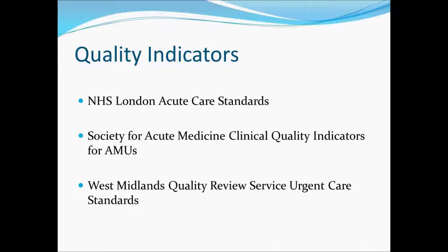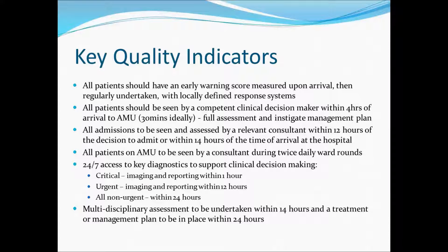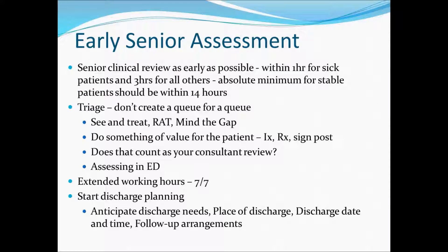Quality indicators are a good way of assessing where you are and identifying areas for improvement. The three I refer to most often are the NHS London acute care standards, the Society for Acute Medicine clinical quality indicators, and the West Midlands urgent care standards — they all essentially sing from the same hymn sheet. Key indicators include having early warning scores on arrival and at regular intervals with appropriate response systems, and all patients should be seen by a competent clinical decision maker — really F2 and above — within four hours of arrival, though 30 minutes is a better target.